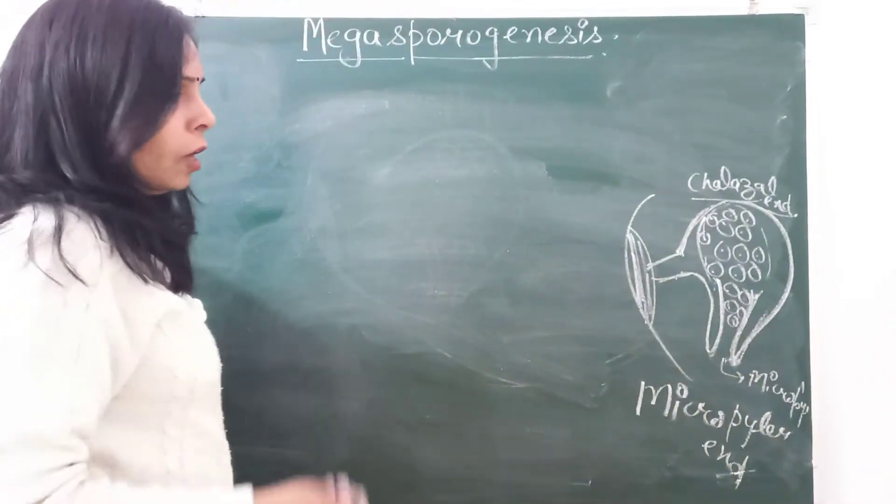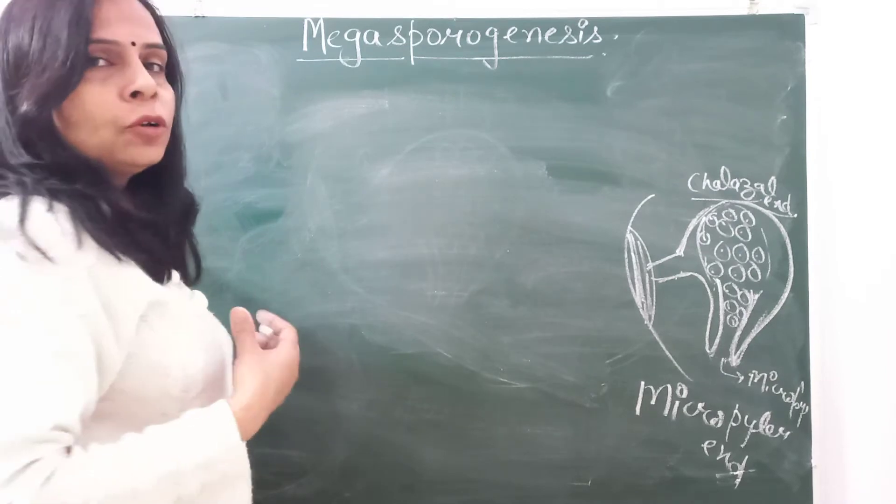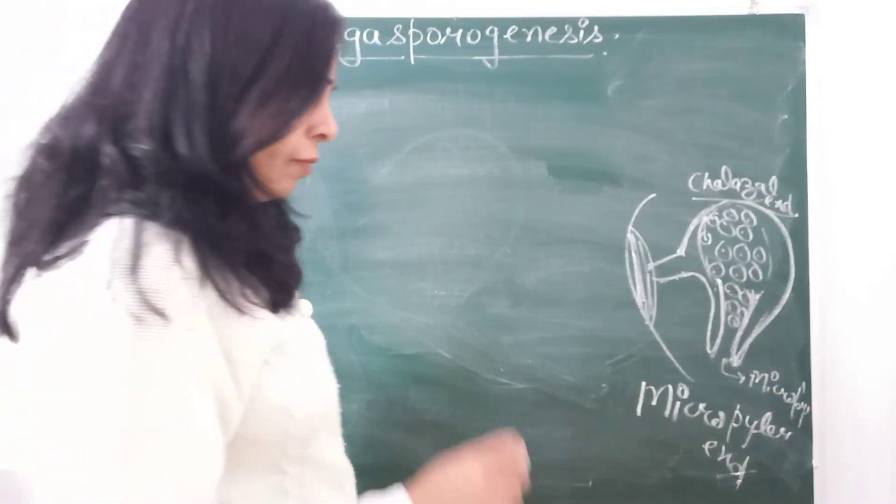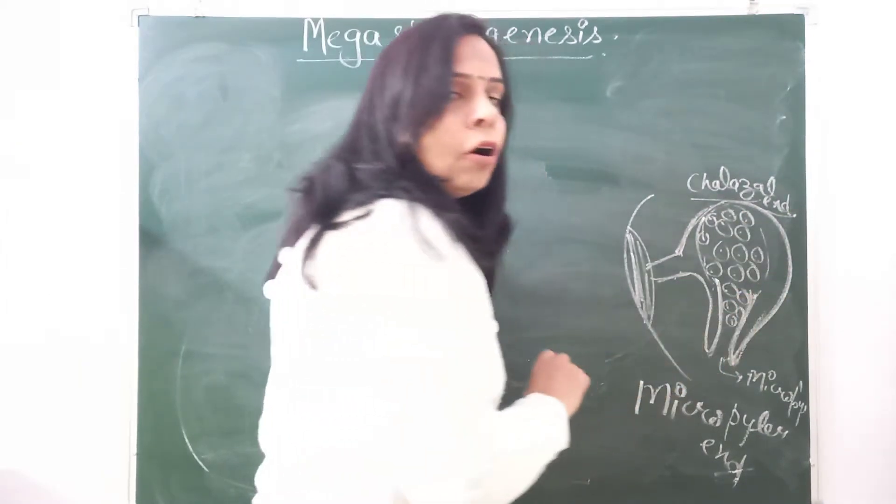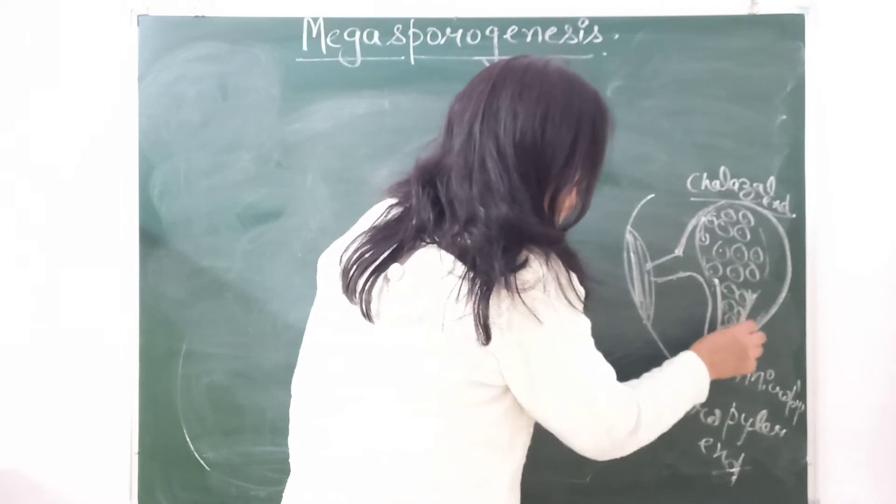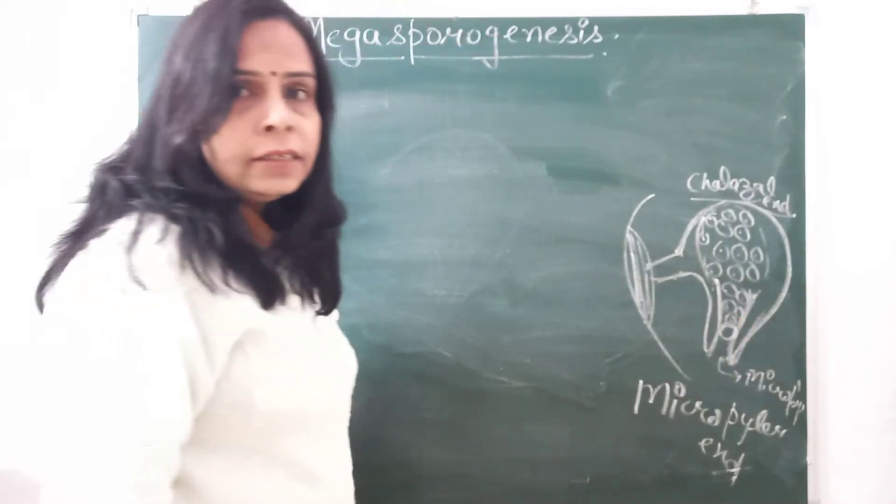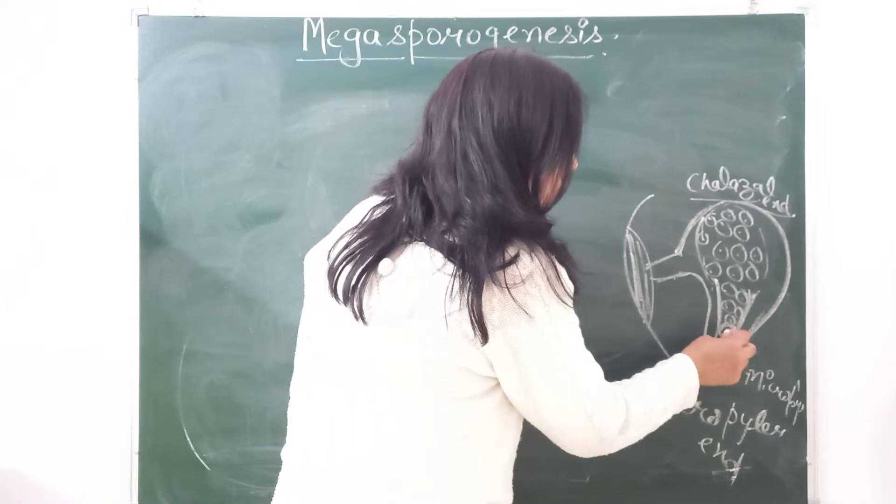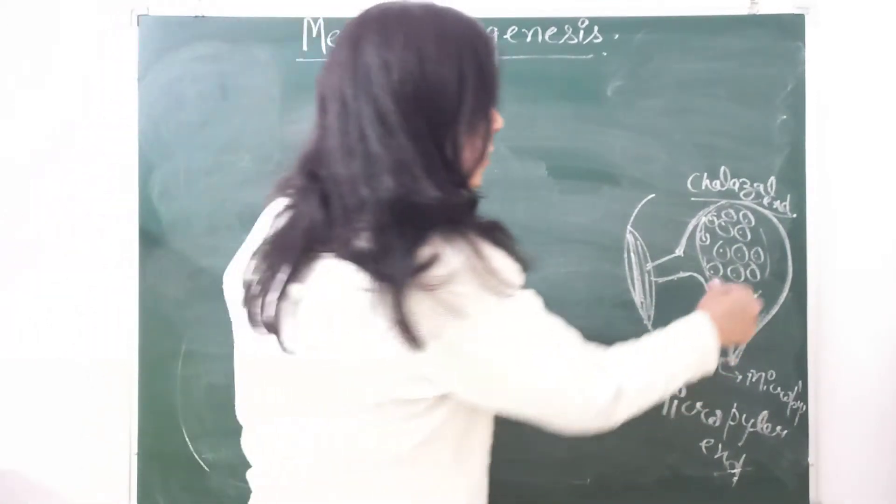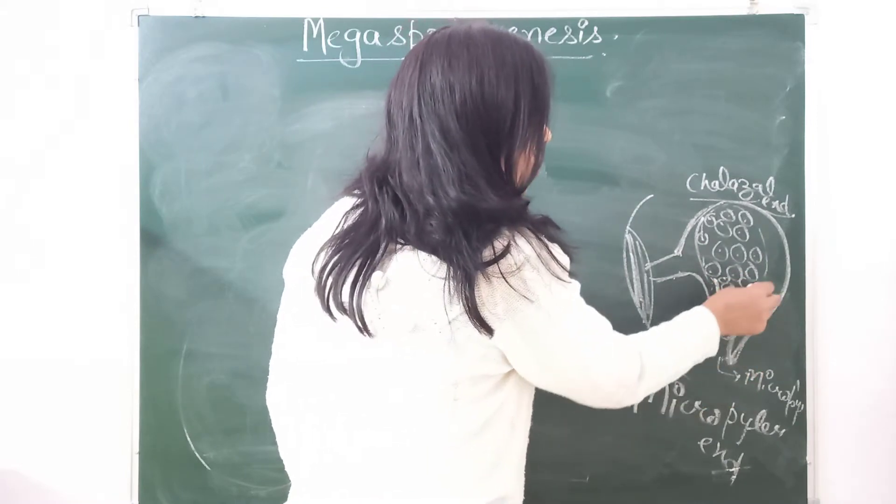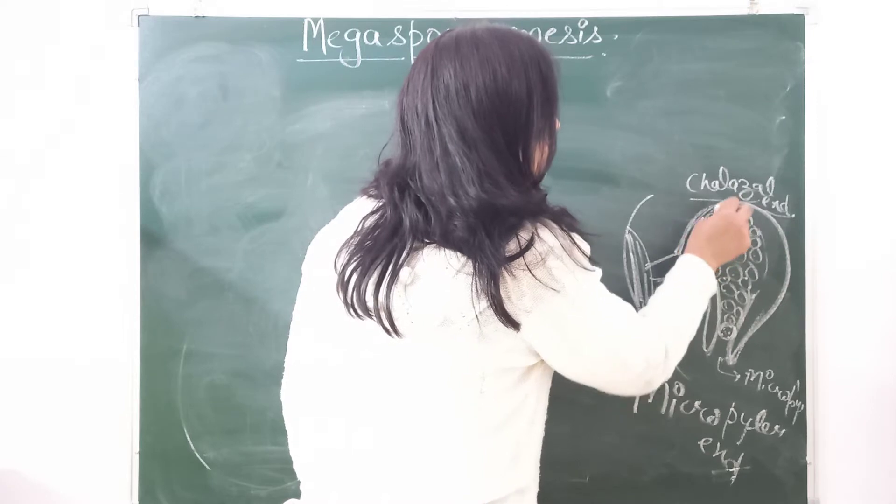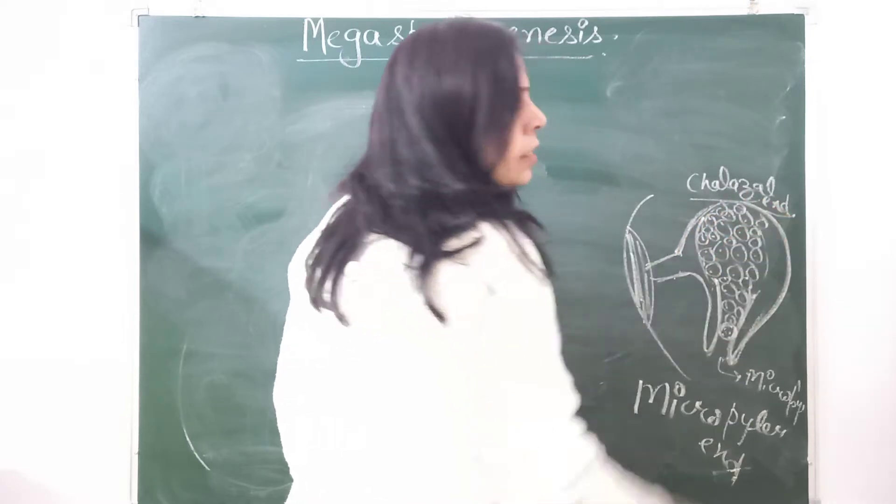I have told you that these are the nucellar cells. All are diploid. There is one cell at the micropylar end with dense cytoplasm. This complete area is filled with nucellar cells, but not all the cells take part in embryo formation.